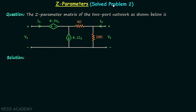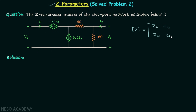We are going to solve problem number two on the calculation of Z parameters. We are required to find the Z parameter matrix of the two-port network as shown. The Z parameter matrix is a 2x2 matrix having the elements Z11, Z12, Z21, and Z22. So we are required to calculate all four elements of the Z parameter matrix.